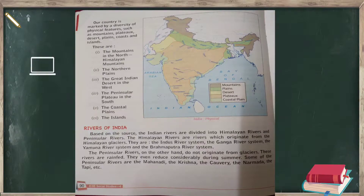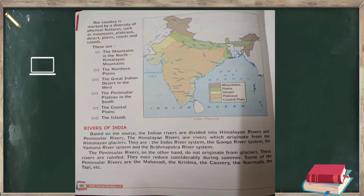Some of the Peninsular rivers are the Mahanadi, Krishna, Kaveri, Narmada, and Tapi. The Himalayan rivers, originating from glaciers, mostly flow throughout the year, while the Peninsular rivers depend on rainfall.